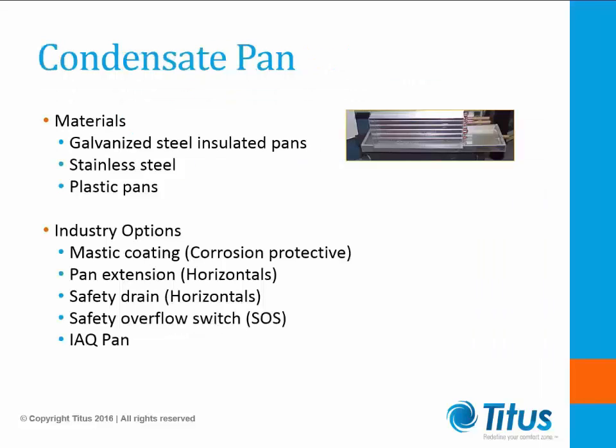Condensate pans: galvanized steel insulated pans are the industry standard. Stainless steel, plastic pans, and mastic coatings are also used when corrosion protection is a concern. Pan extensions help encapsulate valve packages. Safety drain pans reside below the units in case of overflow, and safety switches shut off chilled water when leaks are detected. An IAQ pan is a double-deflection pan that eliminates any chance for standing water.